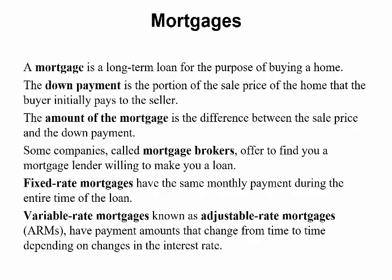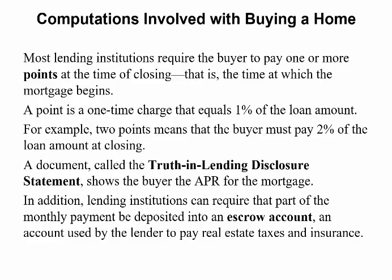You tend to want to avoid adjustable rate mortgages when you go to buy your first home. Most lending institutions require the buyer to pay one or more points at the time of closing — that is the time at which the mortgage begins — think of it as the extra cost to buy it. A point is a one-time charge equal to 1% of the loan amount. For example, two points means the buyer must pay 2% of the loan amount at closing upfront. A document called the Truth in Lending Disclosure Statement shows the buyer the annual percentage rate, APR, for the mortgage. Lending institutions can also require that part of the monthly payment is deposited into an escrow account, which they use to pay things like real estate taxes and insurance.